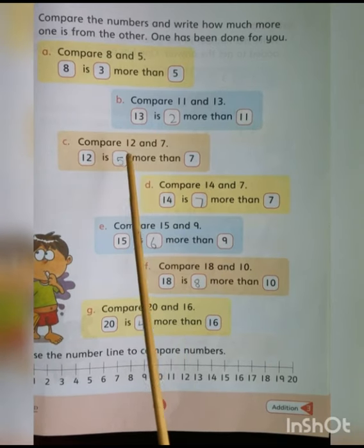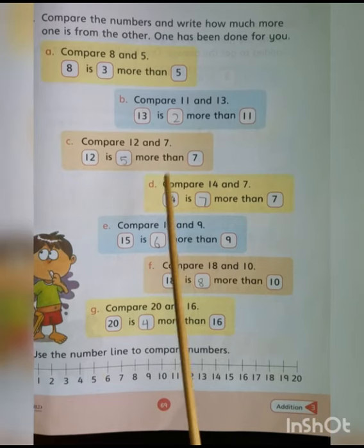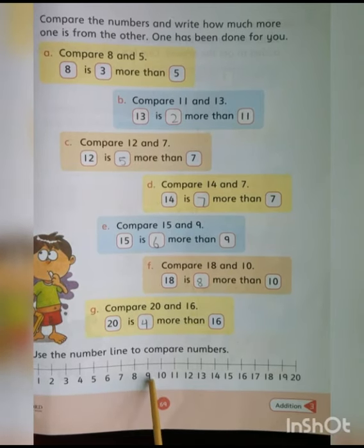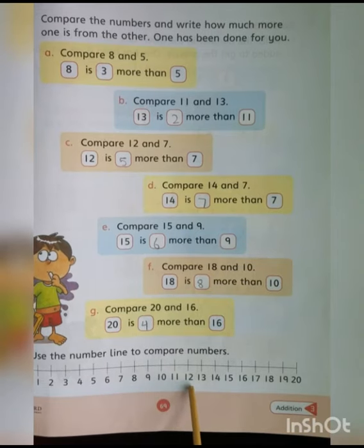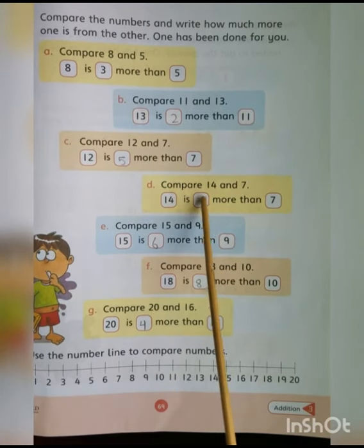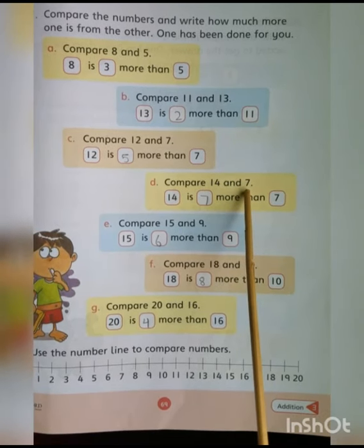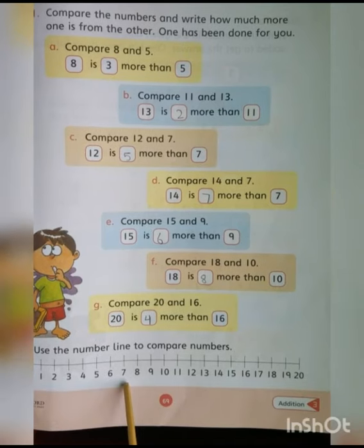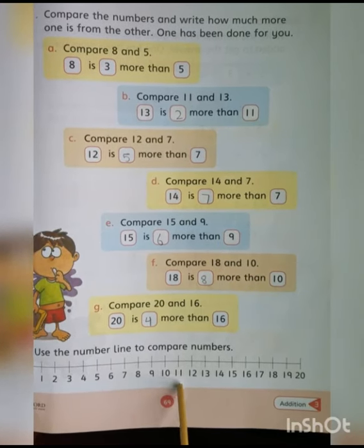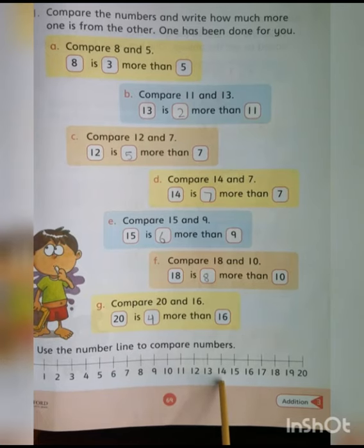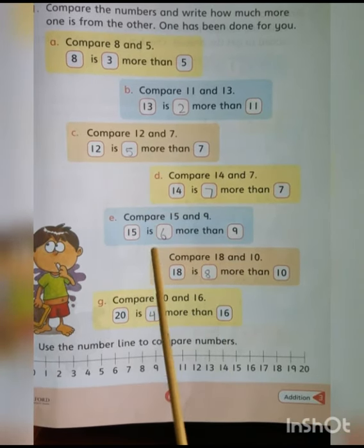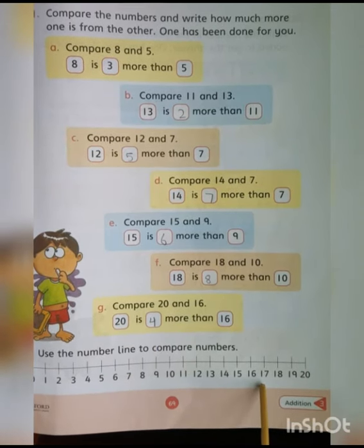Compare 12 and 7. Smaller number is 7. Find 7 in the number line, then reach 12: 1, 2, 3, 4, 5. So 12 is 5 more than 7. Compare 14 and 7 — smaller number is 7. Find 7, reach 14: 1, 2, 3, 4, 5, 6, 7. So 14 is 7 more than 7. For D, E, F and G — آپ بالکل اسی طریقے سے کریں گے، number line کو دیکھتے ہوئے۔